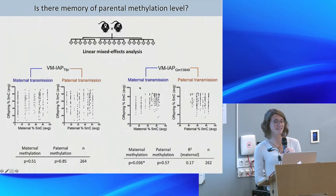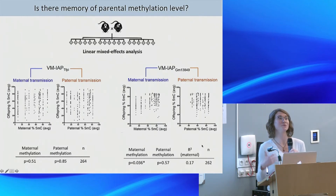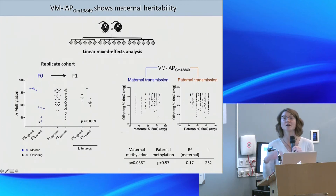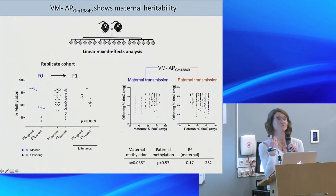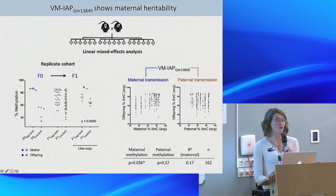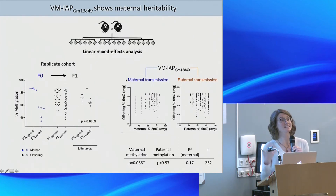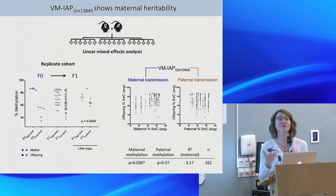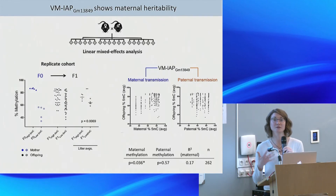Reviewers pointed out that the maternal effect result came from a single region, so we replicated it with a smaller cohort — five highly methylated mothers and five lowly methylated mothers — looking at their first litter and doing statistics on litter averages. This replicated and confirmed some memory of maternal methylation state. Overall, our inheritance studies show that yes, it can happen, and we do see some behaving as agouti viable yellow does, but this is the exception rather than the rule. What's more remarkable is this complete reconstruction of variability from generation to generation.